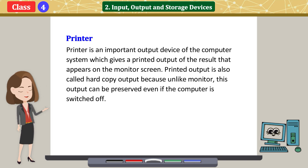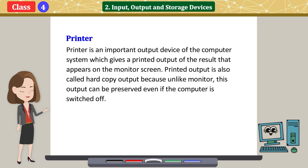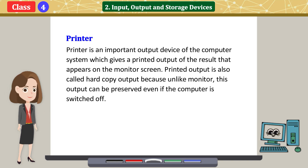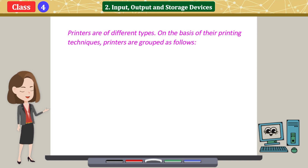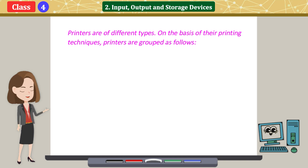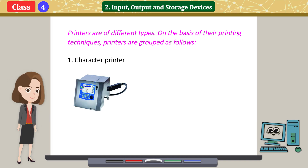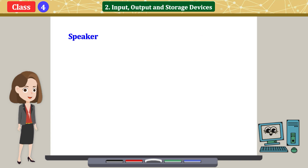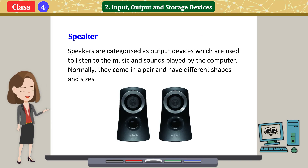Printer is an important output device of the computer system which gives a printed output of the result that appears on the monitor screen. Printed output is also called hard copy output because, unlike the monitor, this output can be preserved even if the computer is switched off. Printers are of different types: character printer, line printer, and page printer.